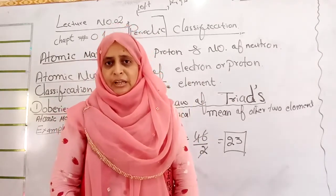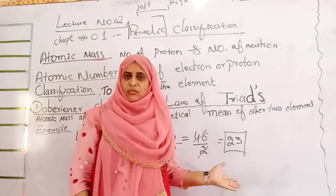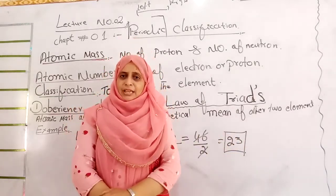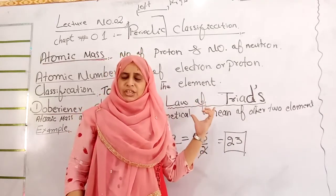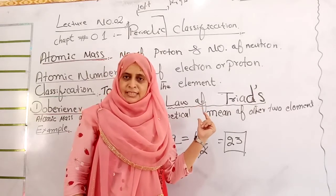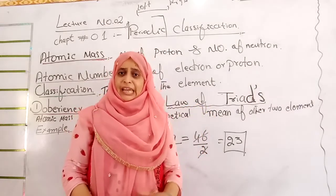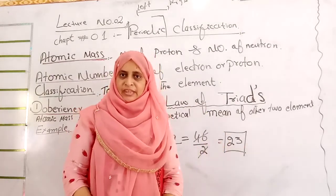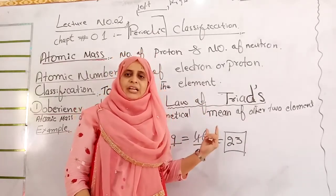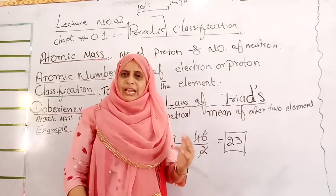Elements are classified on the basis of atomic mass. The old classification was based on atomic mass. The first one is Dobereiner, who classified elements into three groups. Dobereiner's classification is also called the Law of Triads.